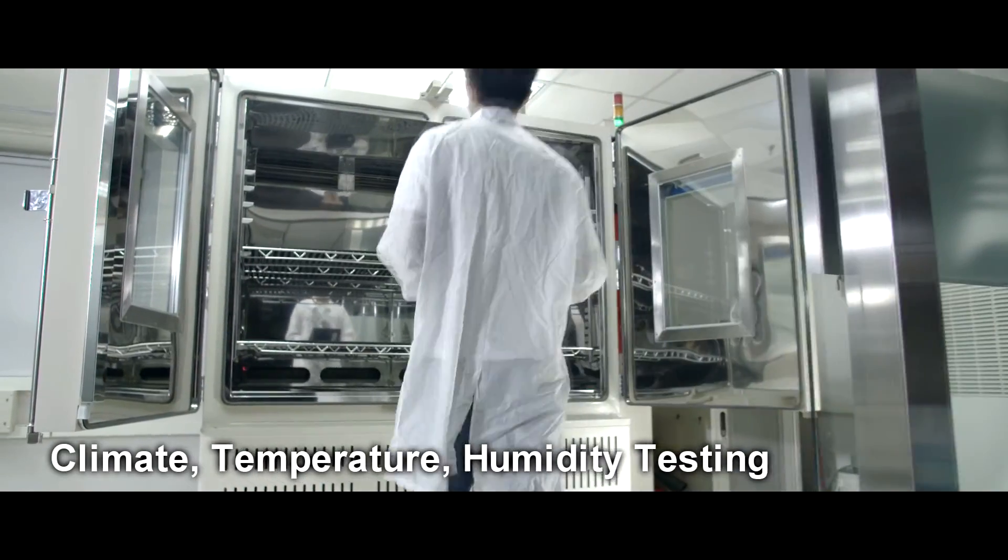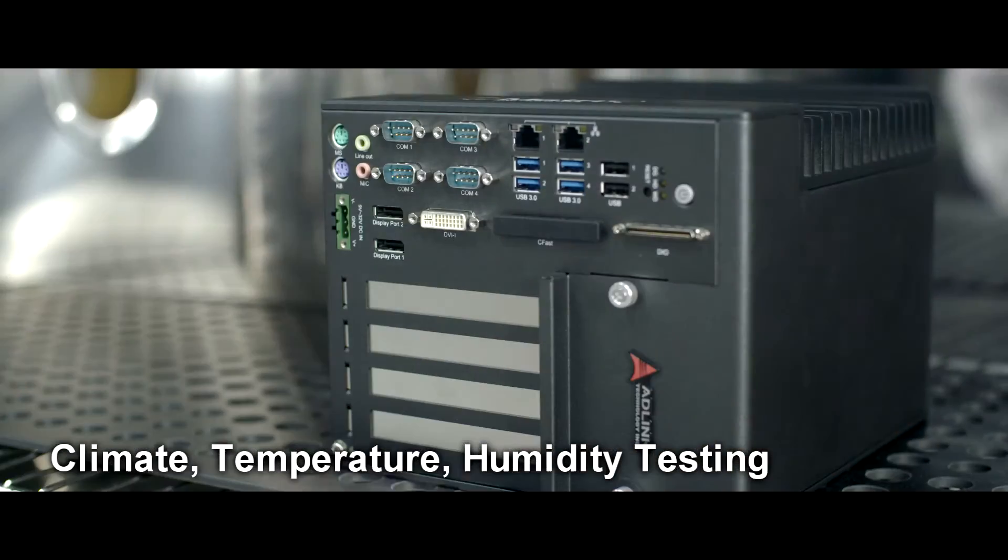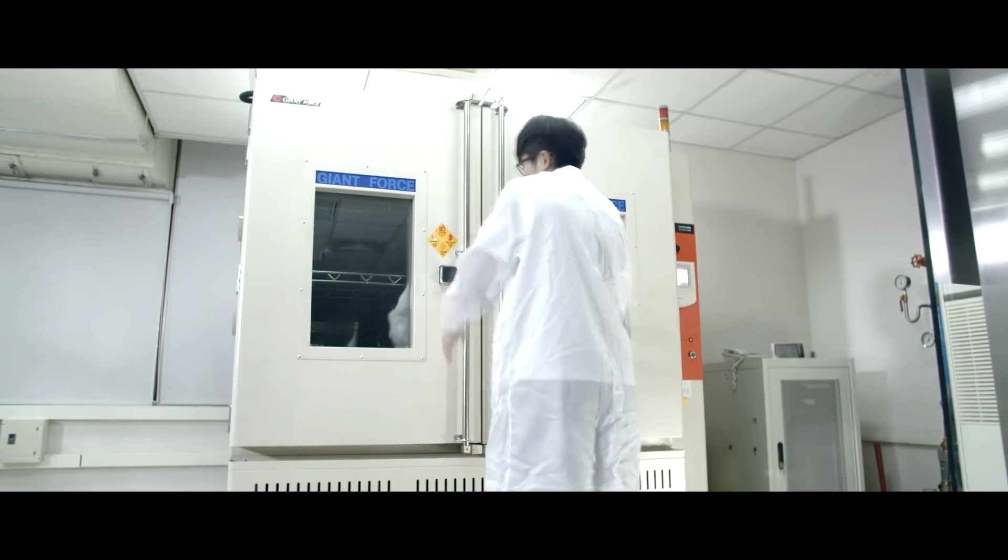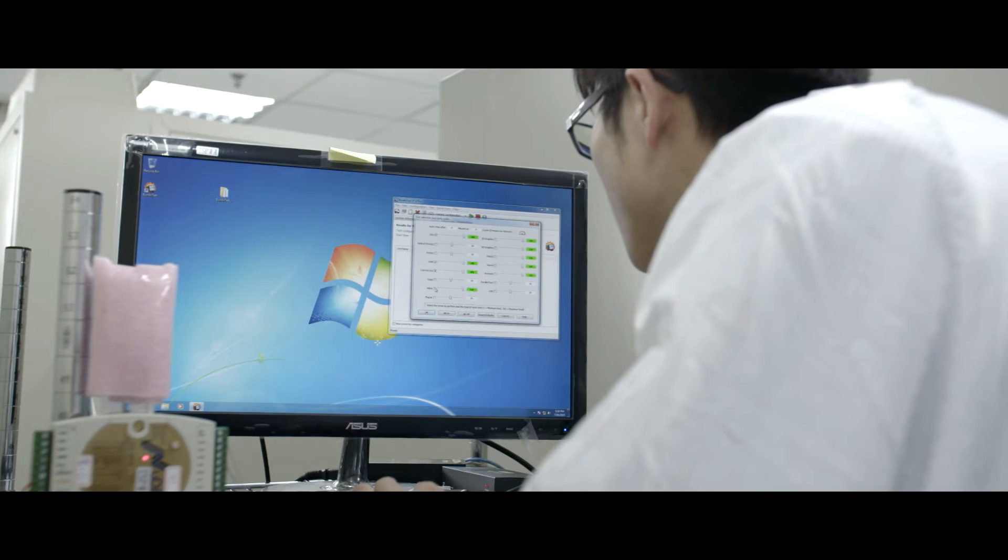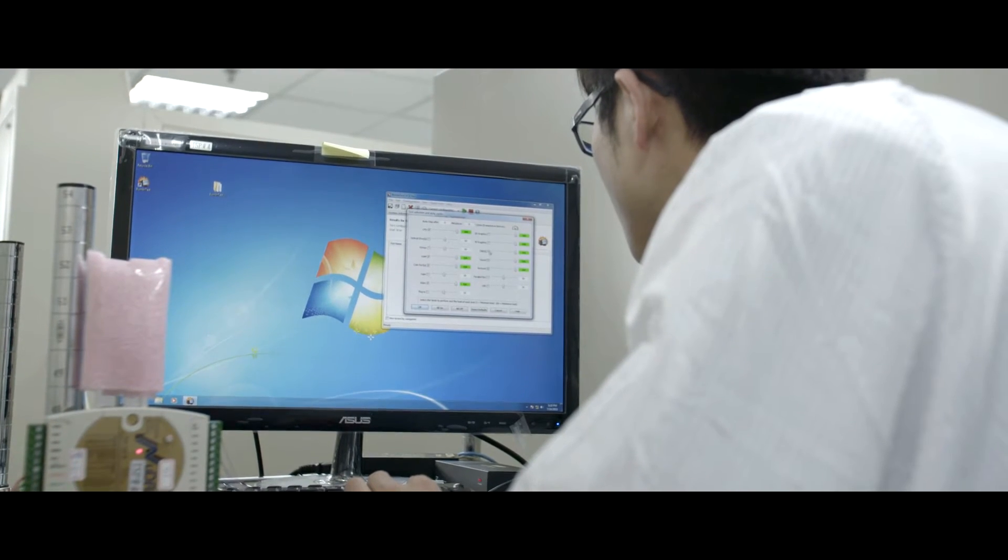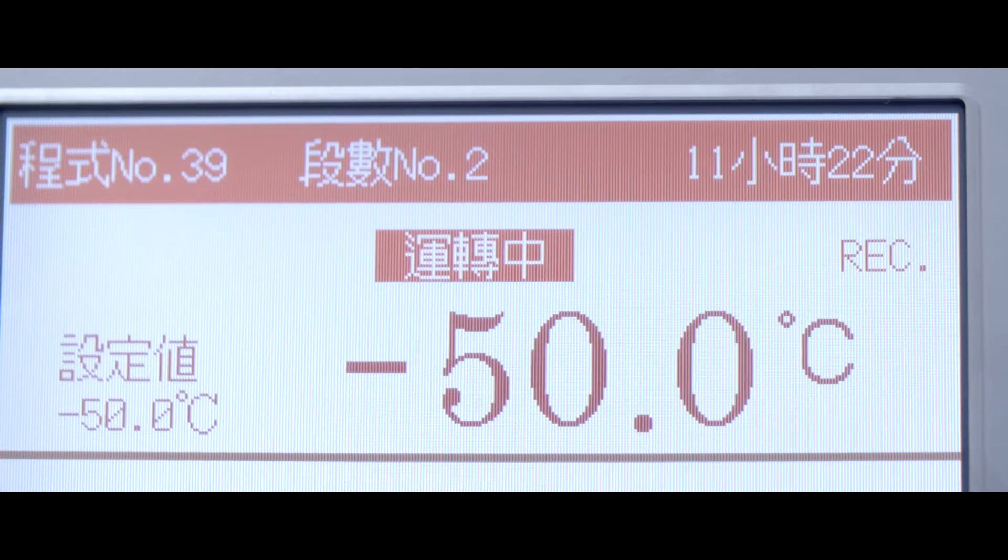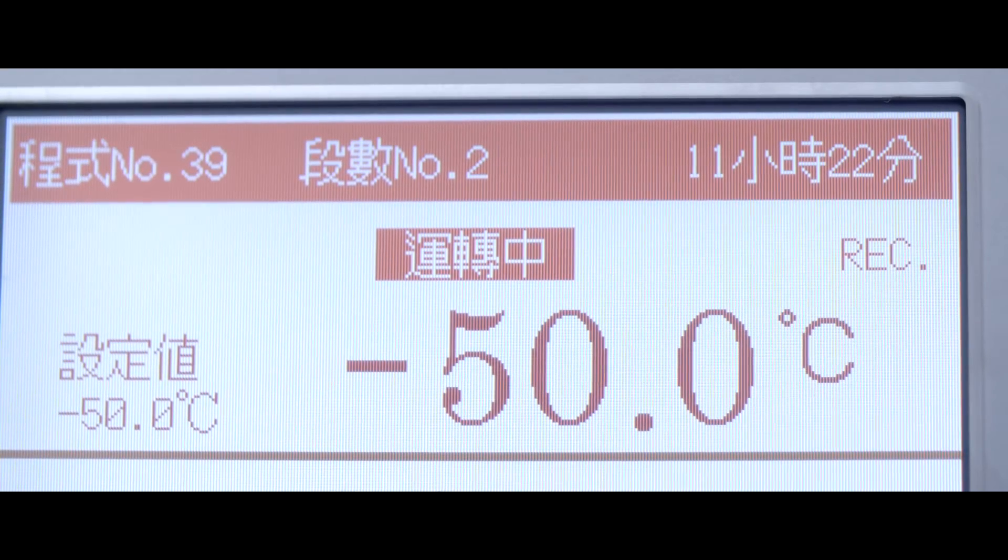The lab features 30 climate chambers capable of producing temperatures in ranges including from minus 60 degrees Celsius to 150 degrees Celsius with controlled humidity. Devices under test undergo temperature profiles with several temperature dwell points and device test cycles.